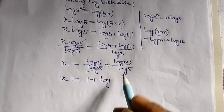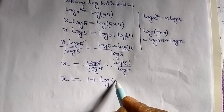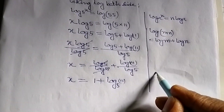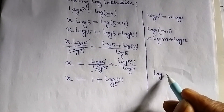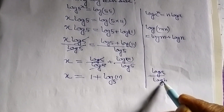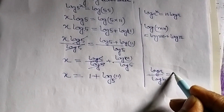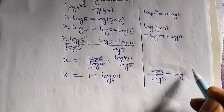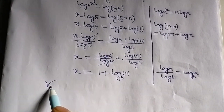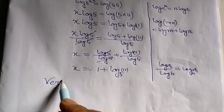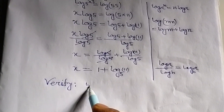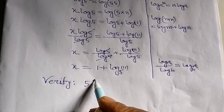So x equals log(5)/log(5) plus log(11)/log(5). That gives x = 1 + log₅(11). This is our required answer, where we use the formula log(a)/log(b) = log_b(a). Now we will have to verify whether this answer is correct or not.